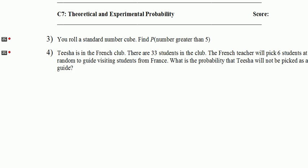Our next problem has Tisha in the French club. There are 33 students in the club. The French teacher's going to pick 6 students at random to guide visiting students from France. What's the probability that Tisha will not be picked as a guide? There are 33 students, 6 of them will be picked. So 33 minus 6 would be 27 students who don't get picked. That's the number of students that will not be picked, divided by the total number of students possible to pick from, that's 33. 27 and 33 have common factors of 3. 27 divided by 3 is 9, and 33 divided by 3 is 11. So our final answer here will be 9/11.